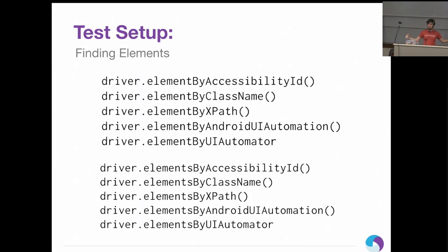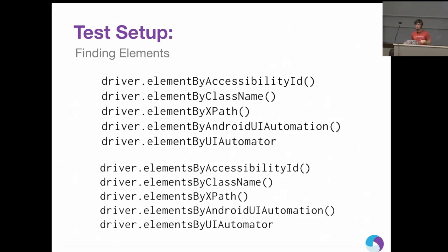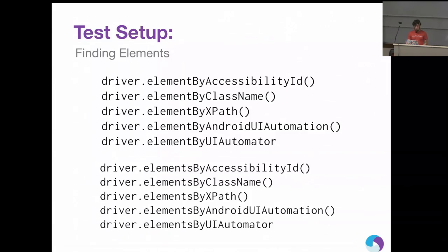There are also the plural versions of all those functions. When you search for a single element, it either returns that element or throws an error. If you search for a list of elements, it returns an array, or an empty array if nothing was found. So watch out — the single ones will throw an error if not found, whereas the multiple ones will just give you an empty array.